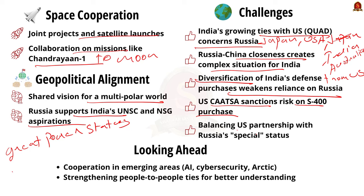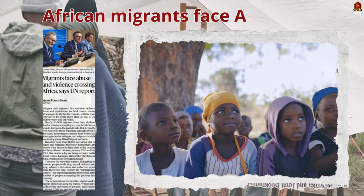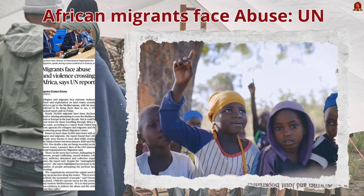India has now signed all four foundational agreements with the USA, creating a dilemma between the comprehensive global strategic partnership with the USA and its special and privileged partnership with Russia. Fourth, the Russian invasion of Ukraine raised questions on India's stand on non-violence and non-alignment in several multilateral forums. Despite these challenges, the future of India-Russia relations looks promising, with continued cooperation in emerging areas like artificial intelligence, cybersecurity, and the Arctic region. Strengthening people-to-people contacts and cultural exchanges will also enhance mutual understanding and goodwill.